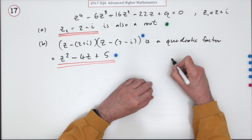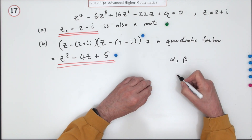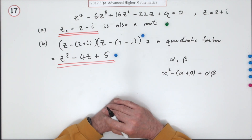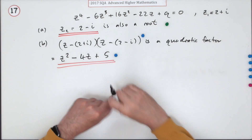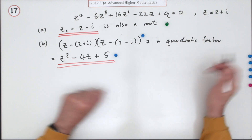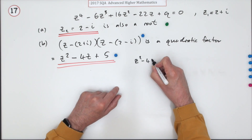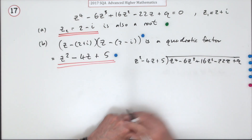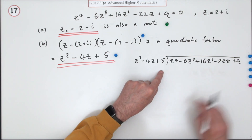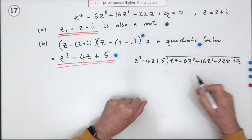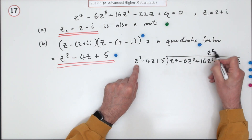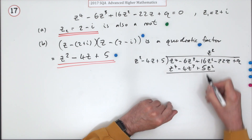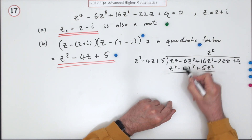You used to know that if two roots are α and β, the quadratic is x²−(sum of roots)x+(product of roots). Since z²−4z+5 is a factor, dividing it into the degree-four polynomial should go in exactly. Setting up the algebraic long division with z²−4z+5 as the divisor.